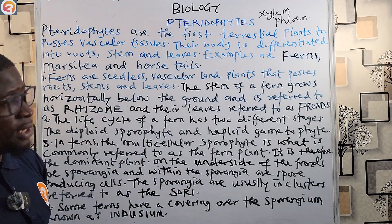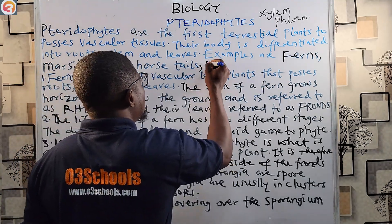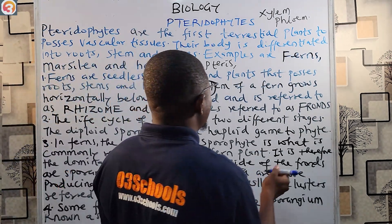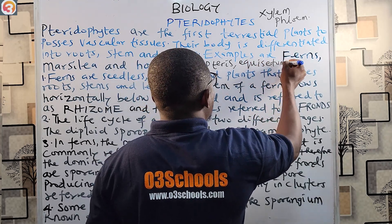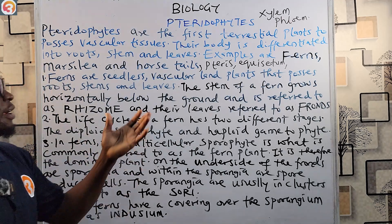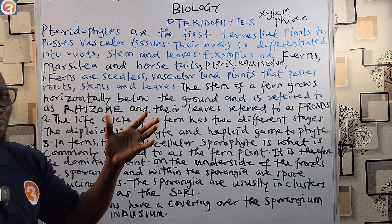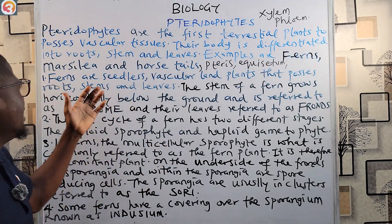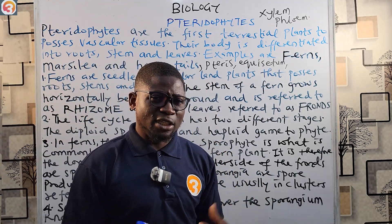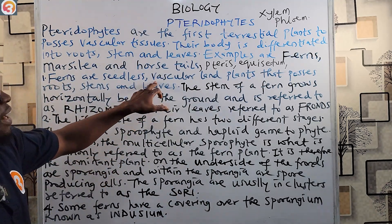Examples of pteridophytes include Marsilea, horsetails, Pteris, Equisetum, and Selaginella. The most dominant and important ones are the ferns and the horsetails. In JAMB exams, questions are mostly asked about ferns, so we'll majorly focus on ferns in this class.